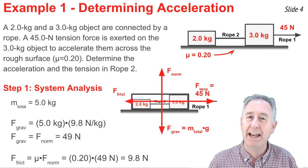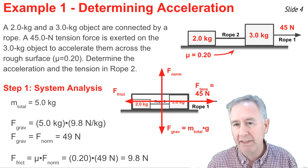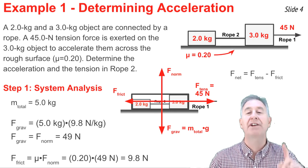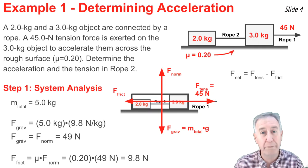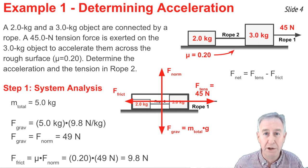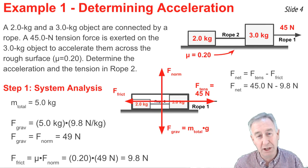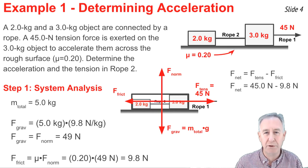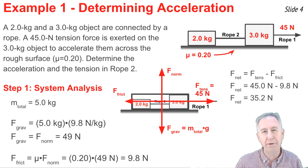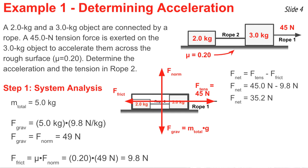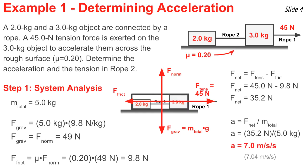Now I conduct an F-net equals MA analysis. The net force is the vector sum of all forces: the forward force minus the backward force, which is 45 Newtons of tension minus 9.8 Newtons of friction, giving 35.2 Newtons. Acceleration equals F-net divided by mass: 35.2 Newtons divided by 5 kilograms gives 7.04 meters per second squared.